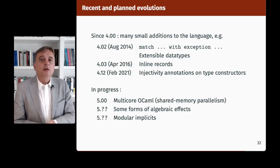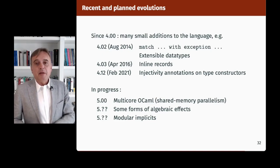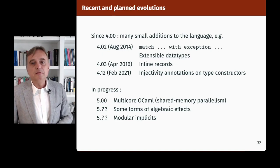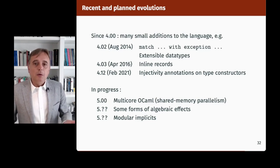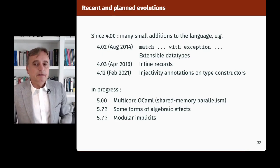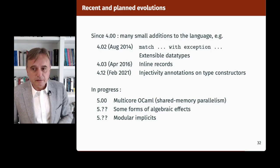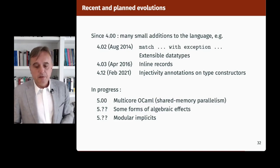Since version 4.00, there have been many additions to the language, though more incremental in nature. The match-with-exception construct introduced in 4.02 is great, extensible data types are pretty nice, and we also have inline records and injectivity annotations on type constructors. In progress: we have been working hard at merging multicore OCaml, which will be the next big thing providing basic support for shared memory parallelism. There is also work in progress on algebraic effects — in particular to give a nicer interface to parallelism — and modular implicits to build a bridge between modules and type classes.